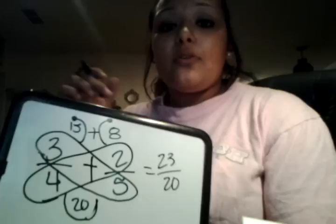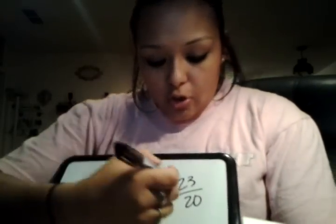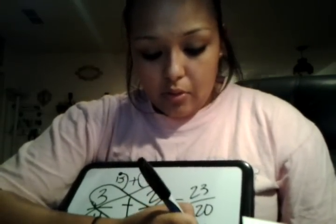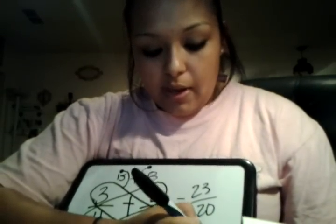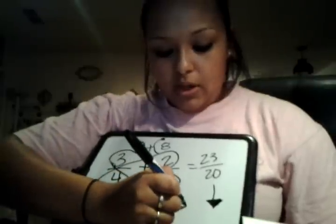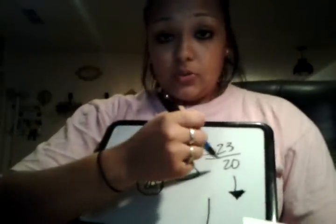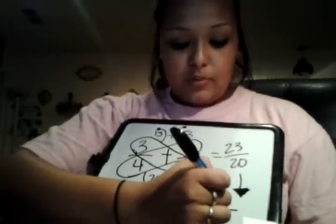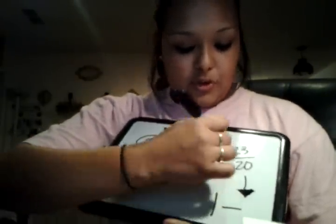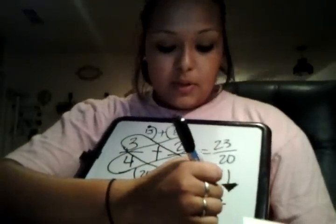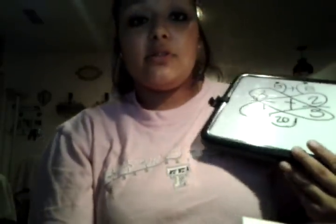Now 23 is bigger than 20, so we can make this number into a whole number. To make it into a whole number it would be 1, because there's one 20 in 20. There are 3 left over after you take 20 away, so it would be 3 twentieths. And that would be our new answer: 1 and 3 twentieths.